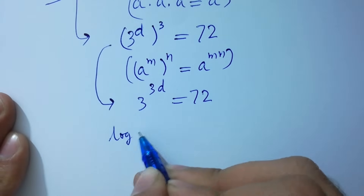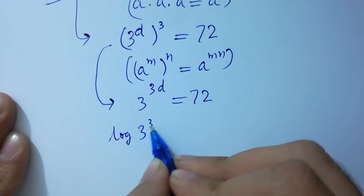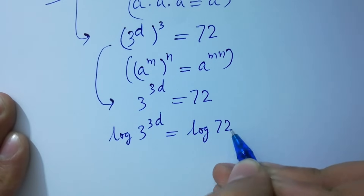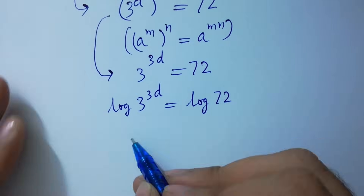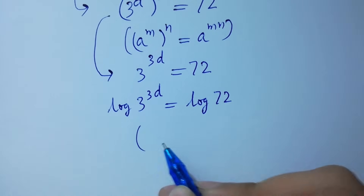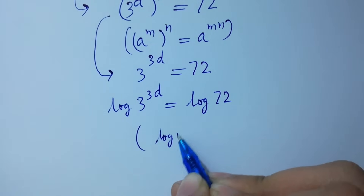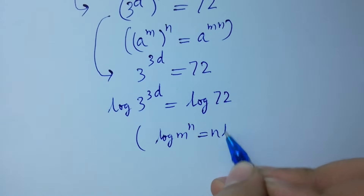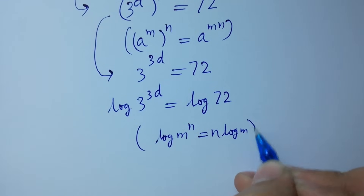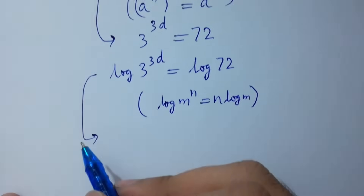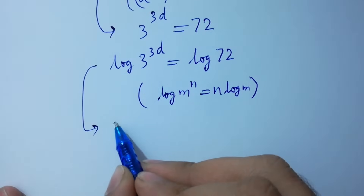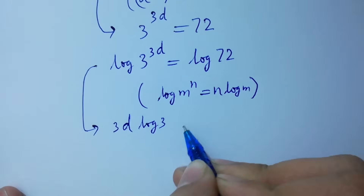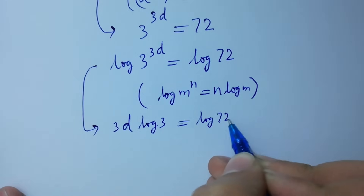we have 3 to the power 3d equal to 72. Take log on both sides: log of 3 to the power 3d equals log 72. Since log m to the power n equals n log m,